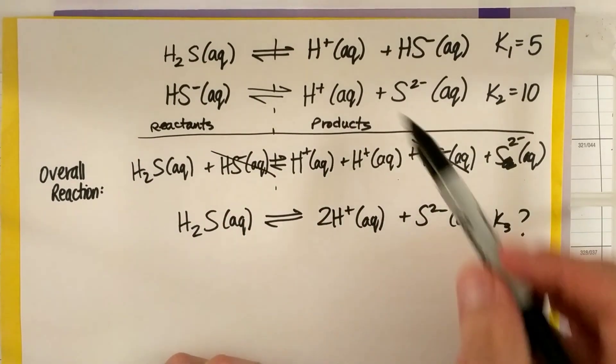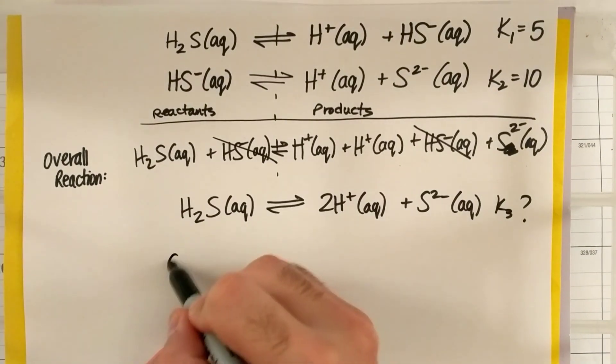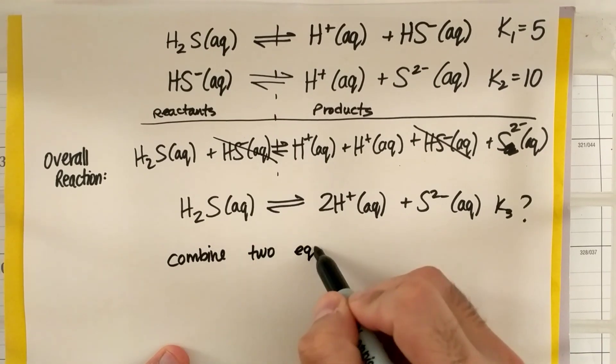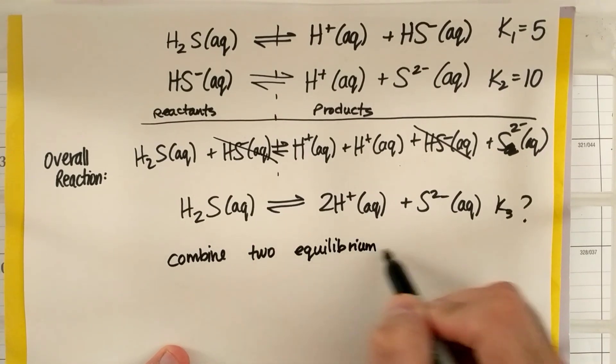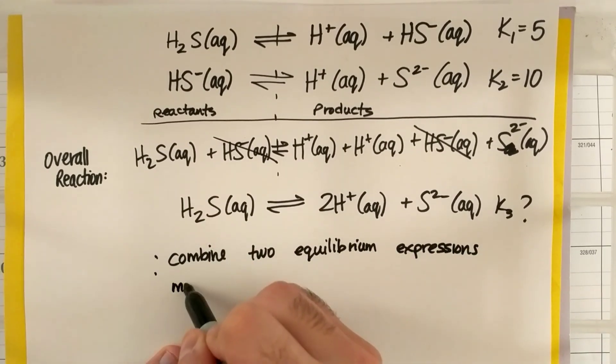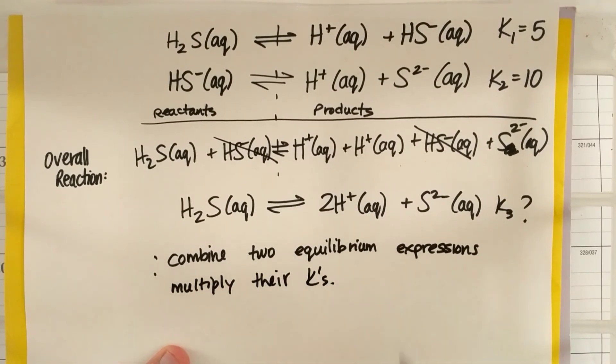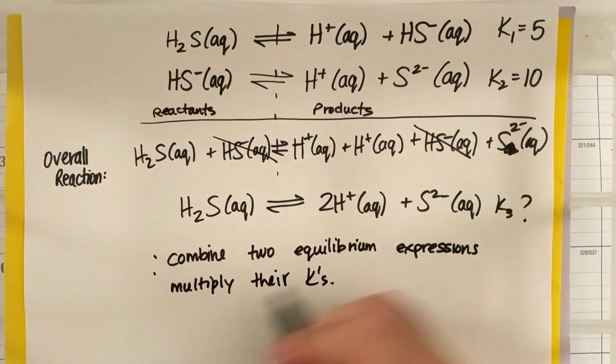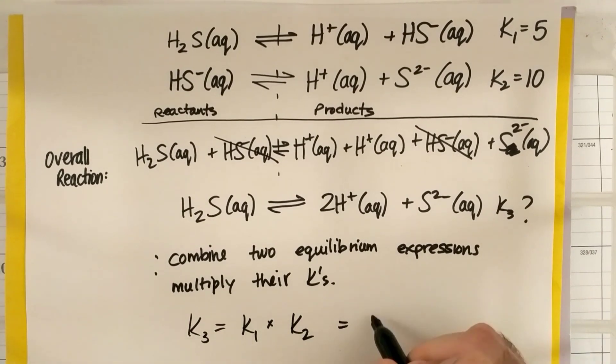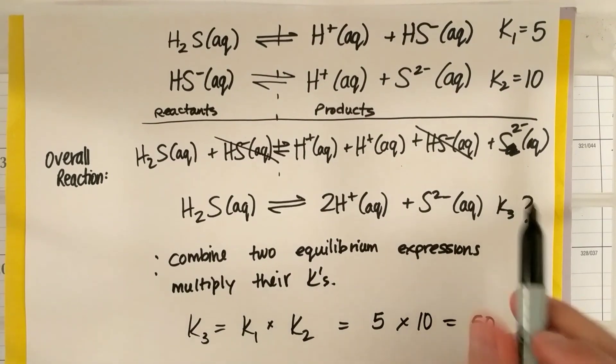So what do I do with my K's when I combine two reactions? Well, just to simplify, when I combine two equilibrium expressions, all I do is multiply their K's. So my K3 is just going to be equal to K1 times K2. So 5 times 10, that's equal to 50. So this K is going to be this.